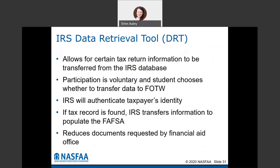The IRS data retrieval tool is an option available when using the FAFSA on the web or My Student Aid mobile app. It allows your tax return information to be transferred directly from the IRS database. It's voluntary — you don't have to use it. It will bring you to the IRS website where you authenticate your information. If they can locate your tax record, you can choose to transfer all of that into the FAFSA without having to enter it line by line. If you're selected for verification, it can also reduce the documents we need from you, since we know the information is accurate.